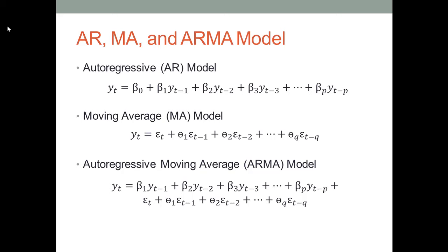The autoregressive model believes that Rome was not built in one day. The data value at the current time spot is built on top of the data values at the previous time spots. For example, today's stock price is built on top of the stock prices in previous days. If we use the autoregressive model to analyze a time series data, our job is to identify how many days we need to look back to forecast the current value, and what the values should be for coefficients like beta 0, beta 1, beta 2, and so on. In practice, we usually use the short name AR to represent the autoregressive model.